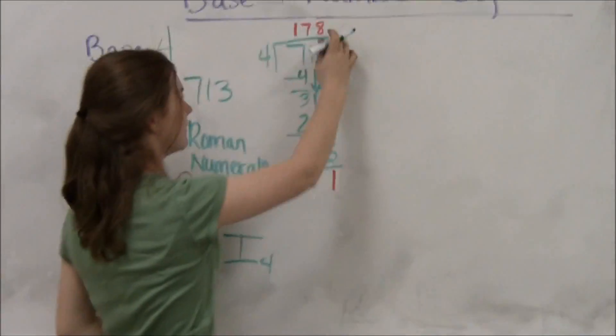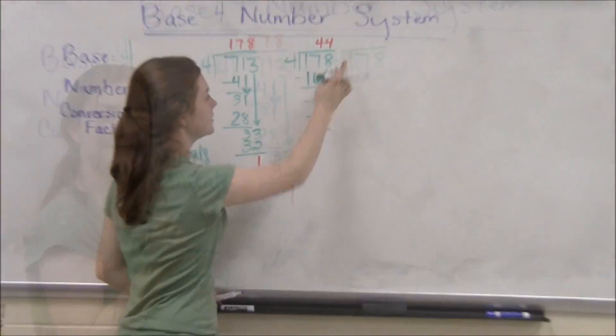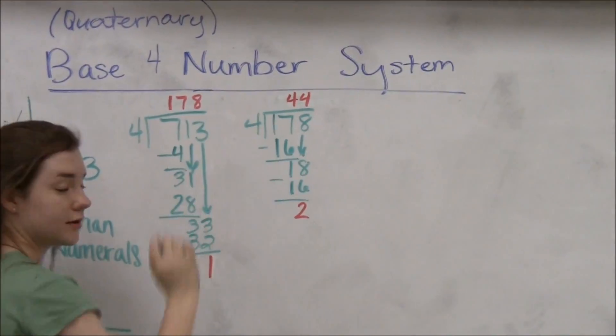We'll take the 178 and divide it by 4 again. Now that we've divided 178 by 4, we're left with a remainder of 2 and a quotient of 44.